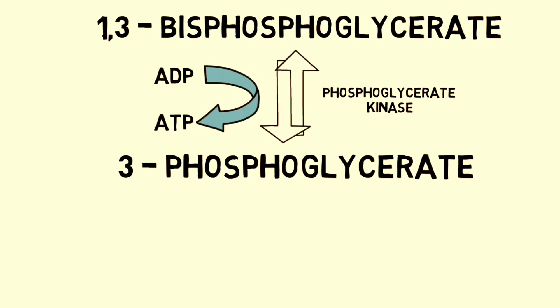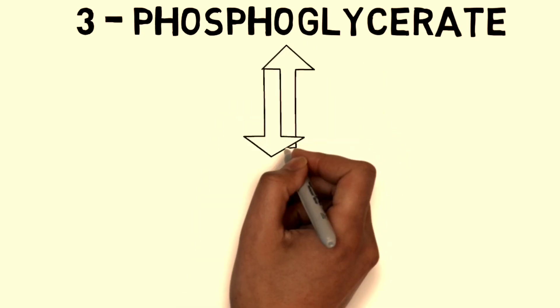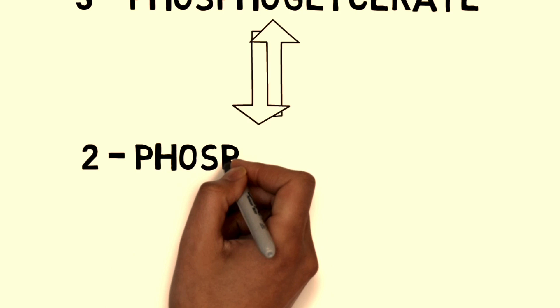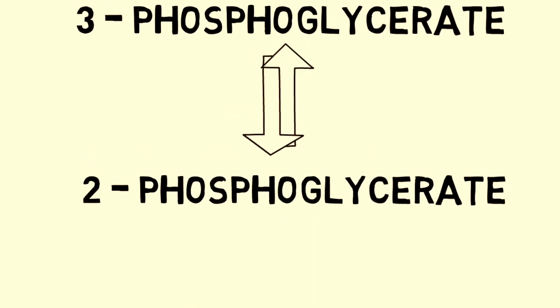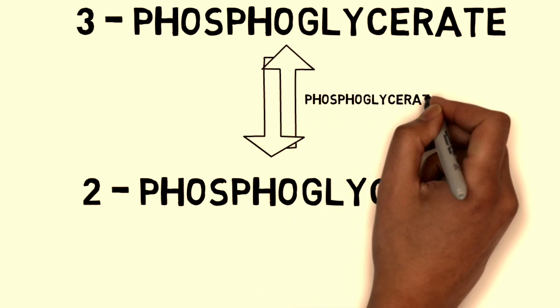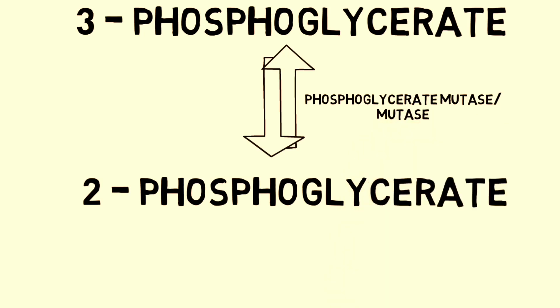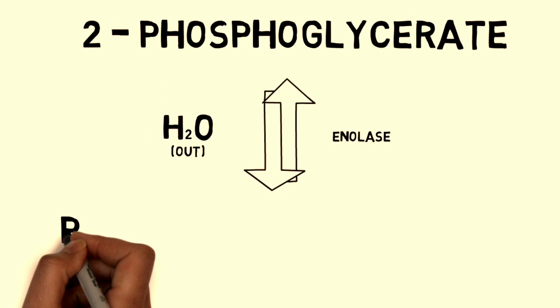This is different from photophosphorylation, which takes place during photosynthesis, and oxidative phosphorylation, which takes place in the mitochondria during the electron transport chain using oxygen. Next, 3-phosphoglycerate is converted to 2-phosphoglycerate by the enzyme phosphoglycerate mutase, which transfers the phosphate group from position 3 to position 2. Then one water molecule is released, and the enzyme enolase produces phosphoenolpyruvate.